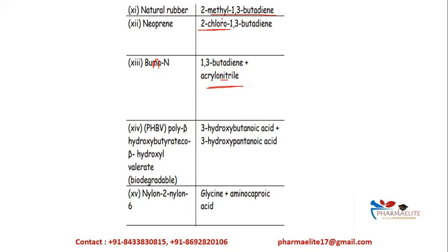Neoprene has a chloro substituent and natural rubber has a methyl substituent on the butadiene backbone. PHBV, a biodegradable polymer, is made from 3-hydroxy butanoic acid and 3-hydroxy pentanoic acid. Nylon 2,6 is made from glycine and amino caproic acid. Remembering these monomers makes it easy to solve questions from this topic.